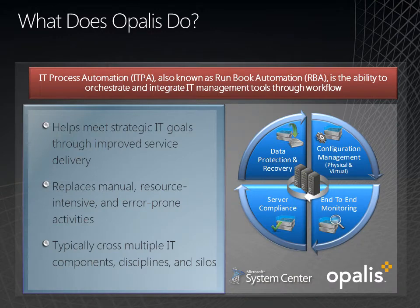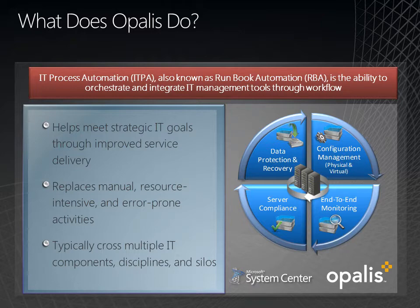So what does Opalis do? It brings IT Process Automation — ITPA — or Runbook Automation — RBA — to the table for the System Center suite of products and the data center as a whole. ITPA or RBA is the ability to orchestrate and integrate IT management tools through workflow. It helps you meet strategic IT goals through improved service delivery, replaces many manual resource-intensive or error-prone activities, and typically crosses multiple components, disciplines, and silos.